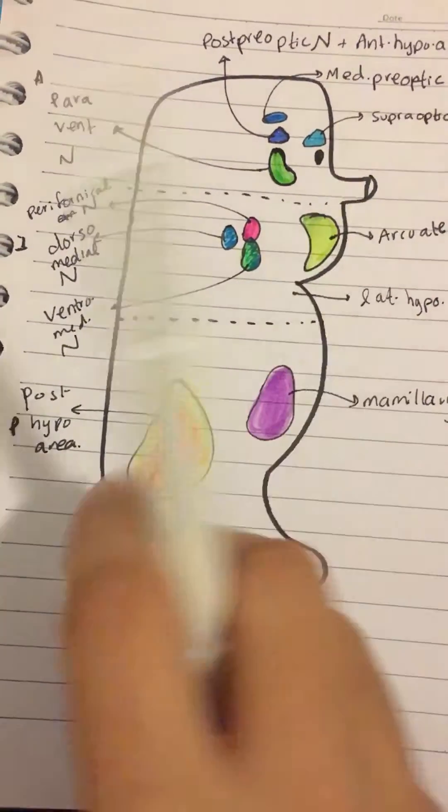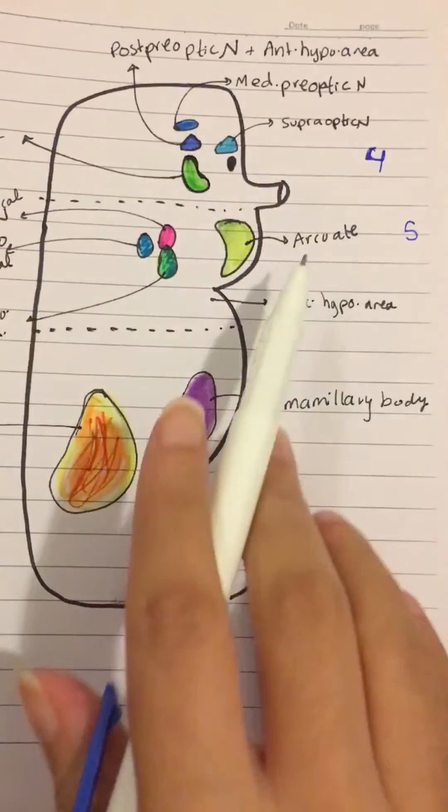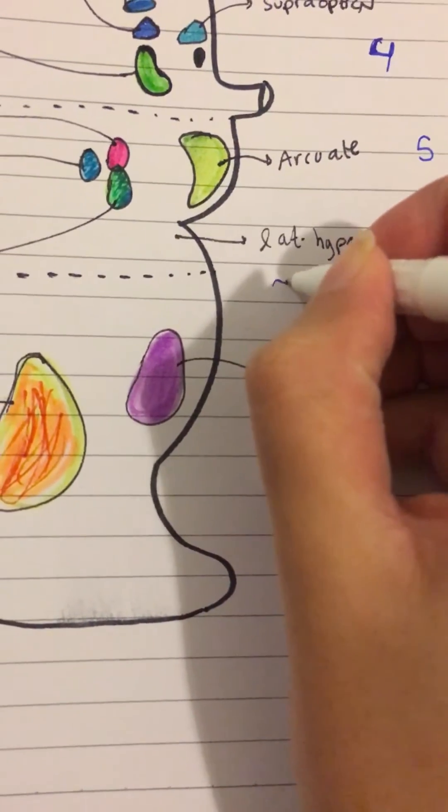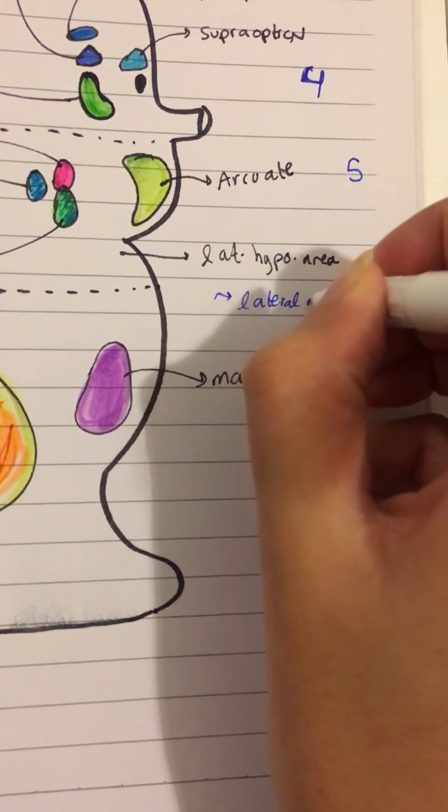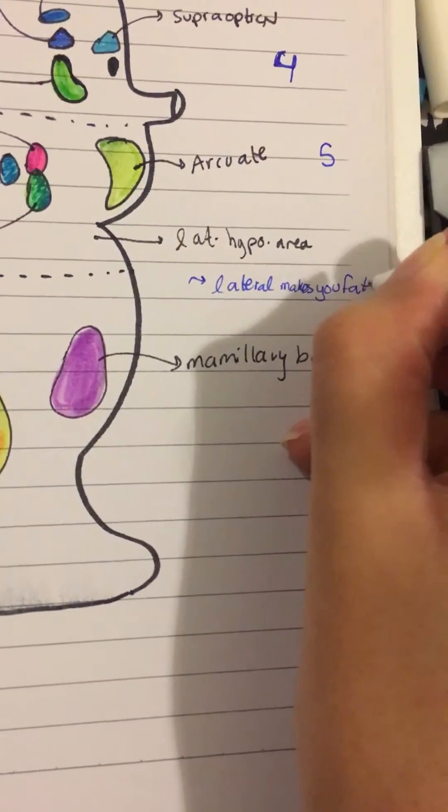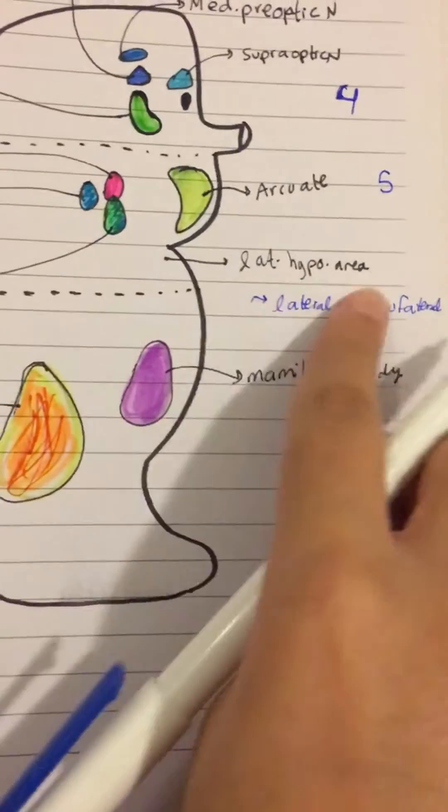Okay, so a few other mnemonics that I would like to mention. Your lateral, basically it's a little trick. Lateral makes you fatural. Alright, so it's for thirst and hunger.